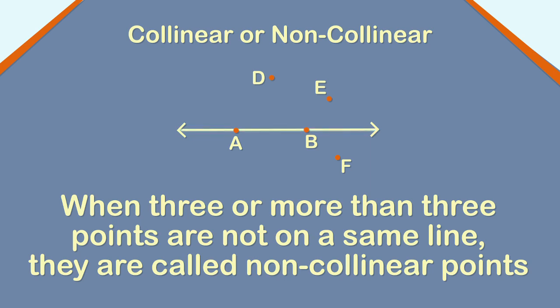But when three or more than three points are not on a same line, they are called non-collinear points. Here, the five points D, E, A, B and F do not lie on the same line. Hence, the points are non-collinear.